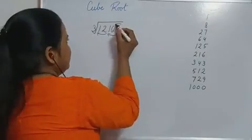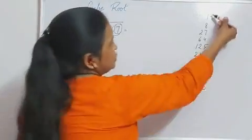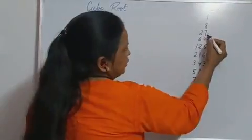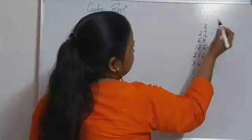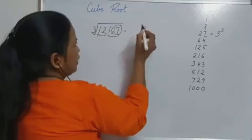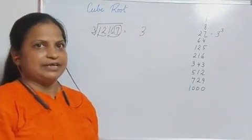Then we will see the unit digit, 7. In which cube is 7 the unit digit? That is here, which is 3 cubed. So the unit digit of the cube root of 12,167 is 3.